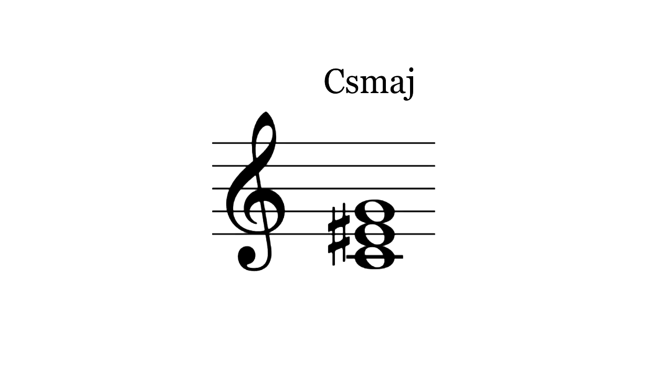The supermajor triad is between a sus4 chord and a major chord. These chords can function like extra unstable versions of those suspended chords, but that's not all they can do.